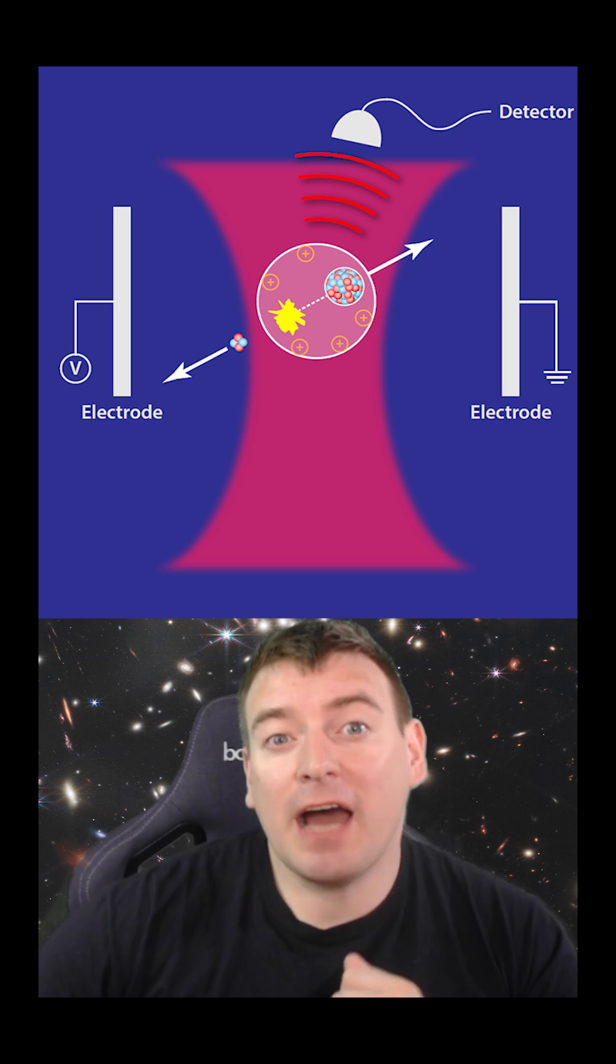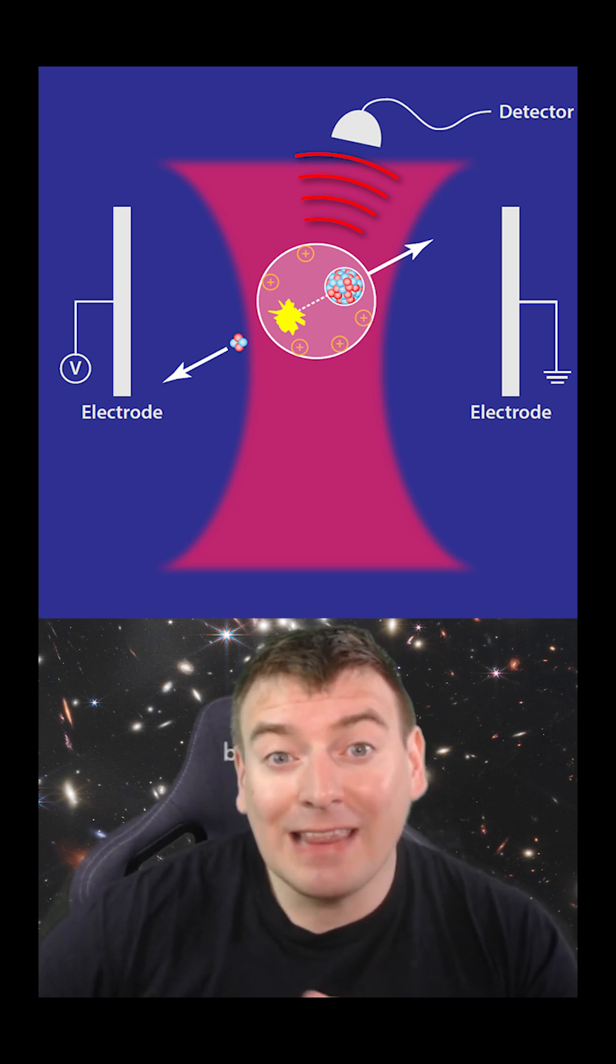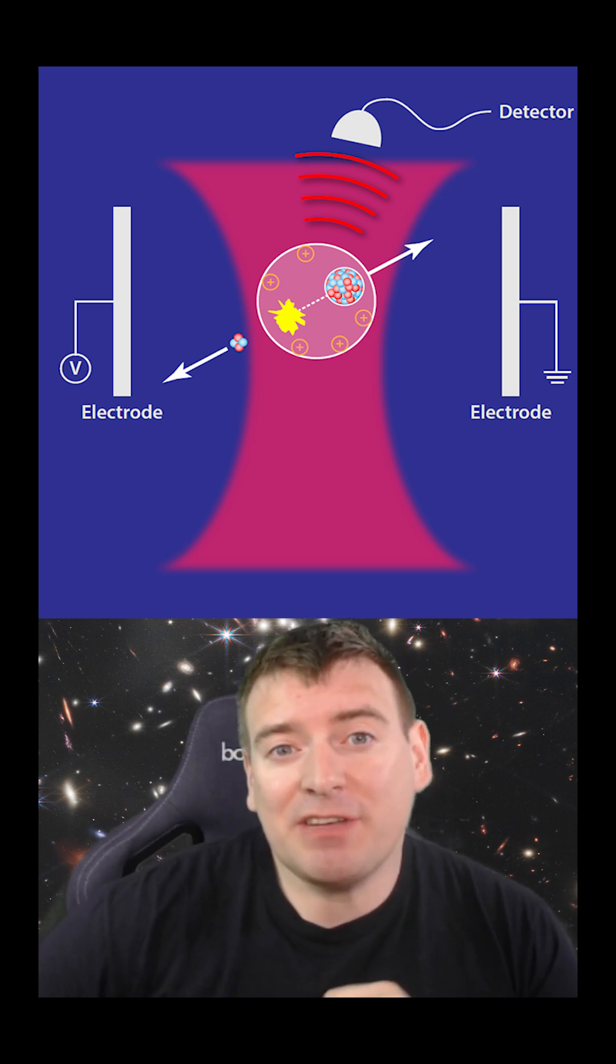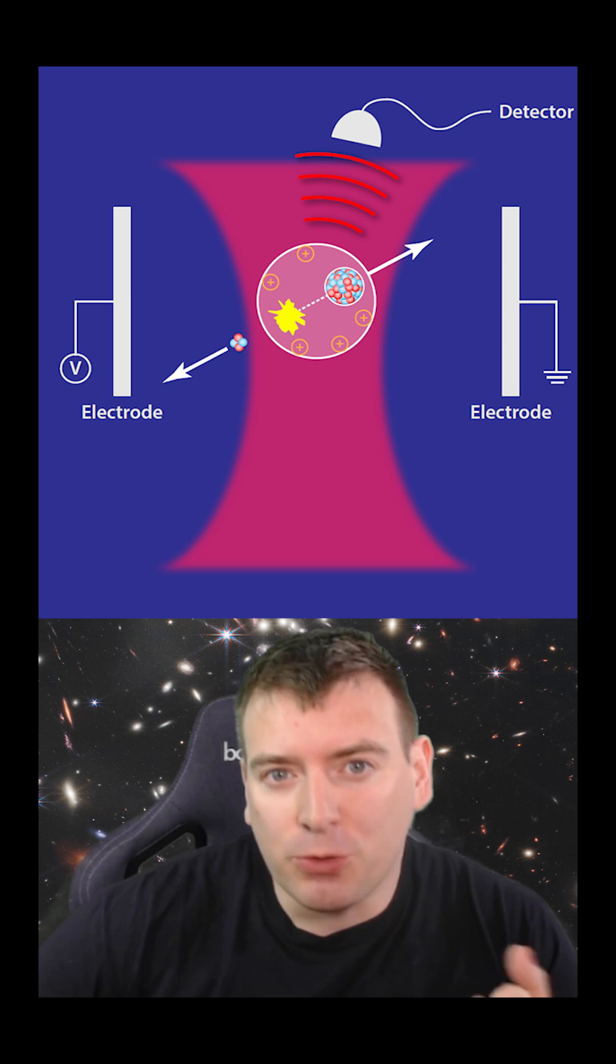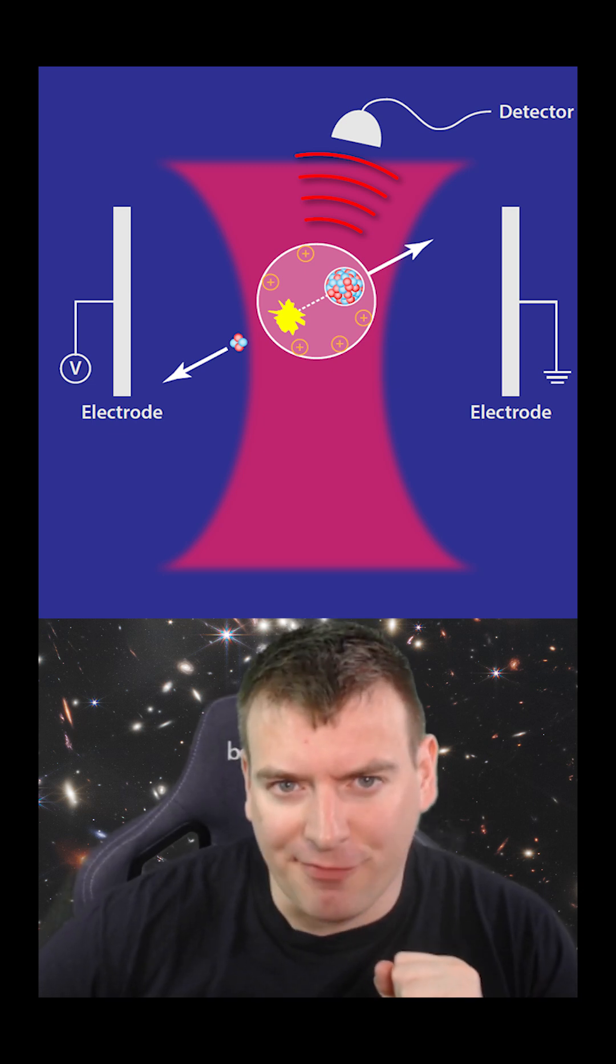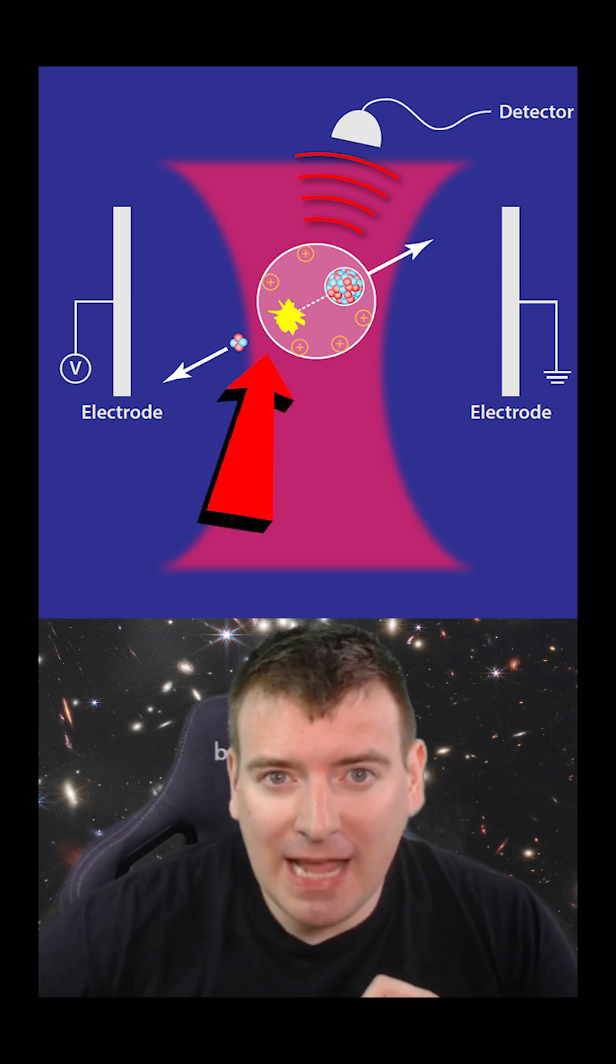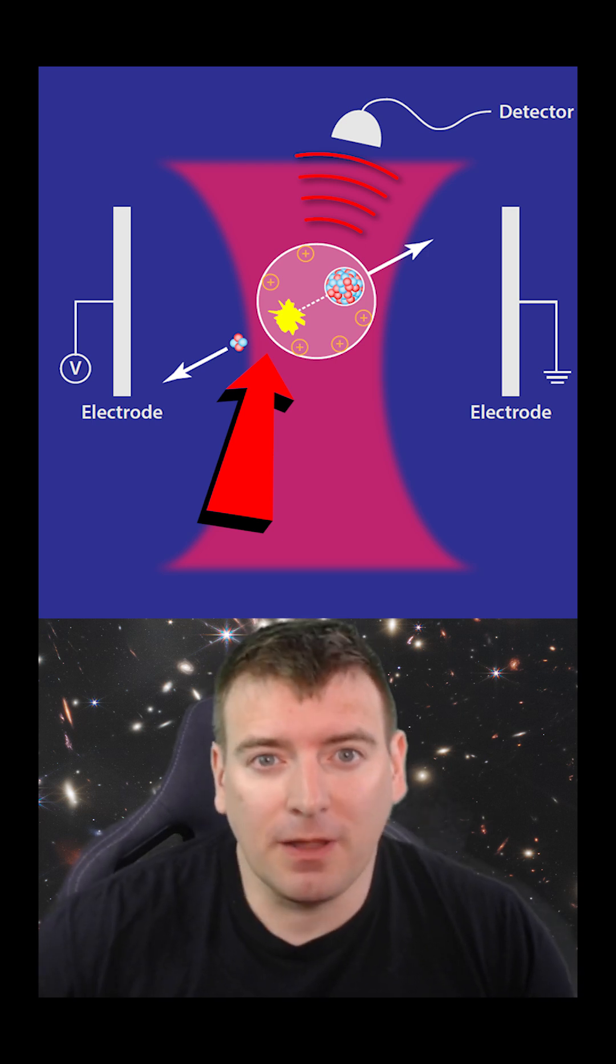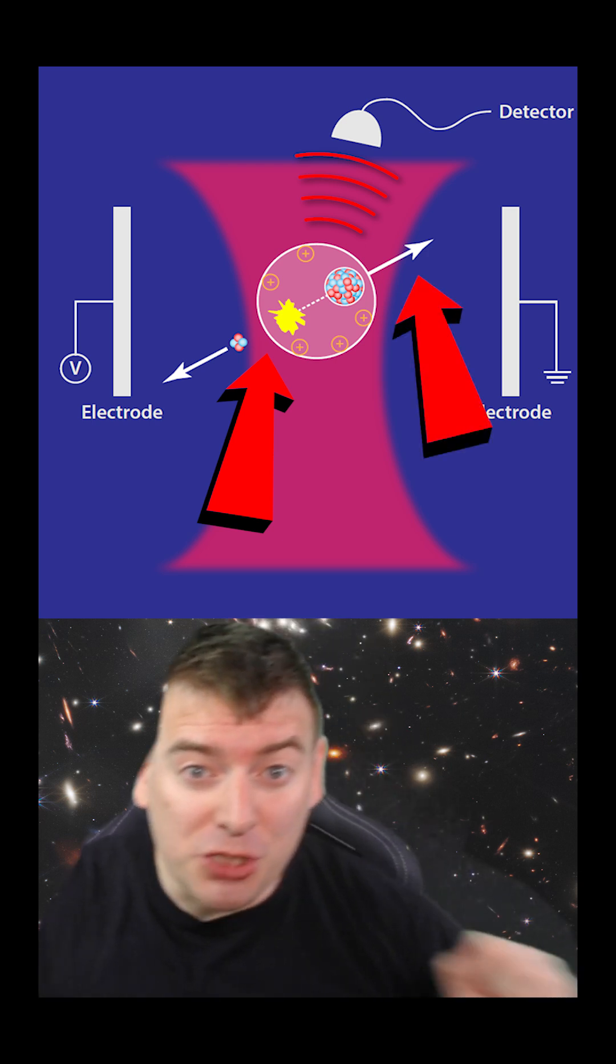Scientists took silica microspheres and implanted them with radioactive lead-212 atoms. They then levitated these spheres one by one in an optical trap under high vacuum to eliminate friction. When a lead atom on the sphere decays, it fires out an alpha particle, and the microsphere recoils and shifts in the trap.